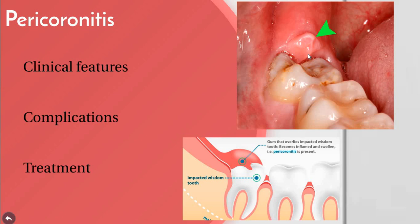Pericoronitis is a dangerous condition that should be treated as soon as possible. Complications may include involvement of submaxillary, posterior cervical, deep cervical, and retropharyngeal lymph nodes. Peritonsillar abscess formation, cellulitis, and Ludwig's angina are infrequent but serious subsequent complications of this condition.